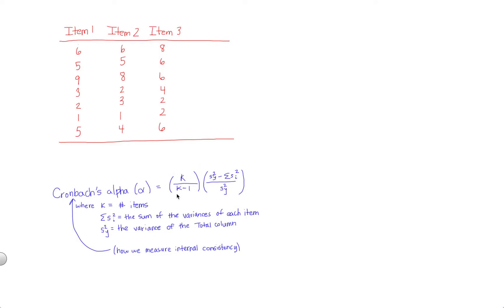So in this formula, k is the number of items, so that's really easy right off the bat, and we're just going to make a note of what that is. We already know that there are three items in this scale, so I'm just going to write over here k equals 3. So that's easy. That part of the problem is always very quick.